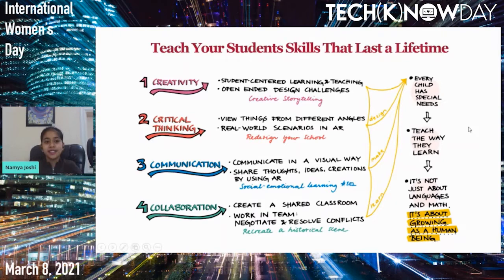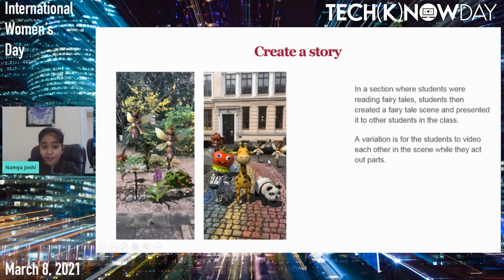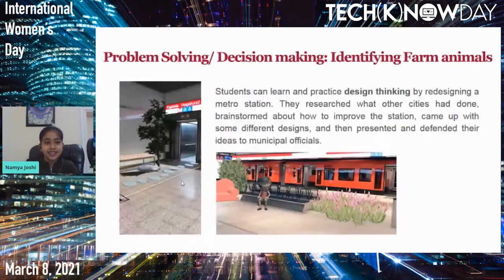It is imperative that we teach students skills that last a lifetime — the four C's: creativity, critical thinking, communication, and collaboration. With 3D Bear, you can create a story — for example, students were given fairy tales to read, then created them in 3D Bear using different variations, bringing a plain garden to life with fairies and bushes using their own creativity. You can also use it for problem solving and decision making, redesigning a public space and making decisions about what to include.